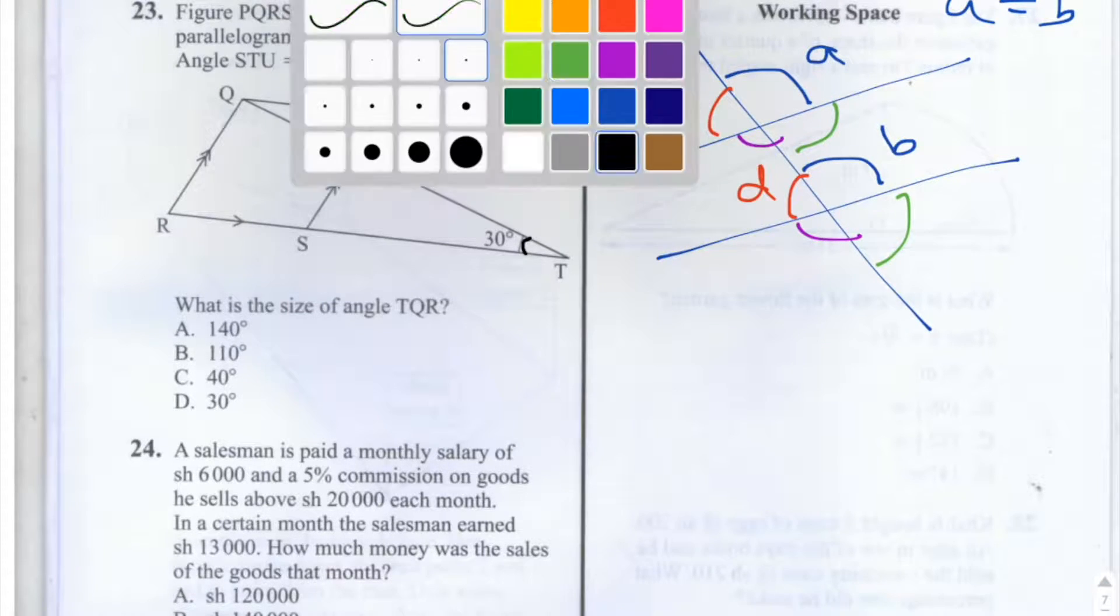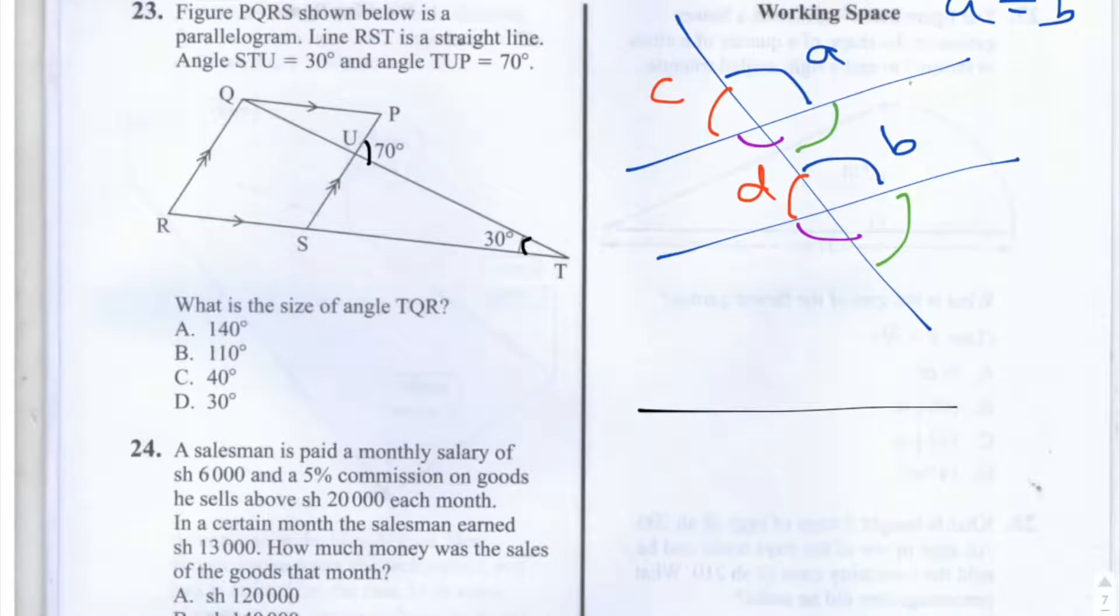We also need to know that if you have angles on a straight line, like so, this angle, this angle, this angle, and this angle, they sum to 180 degrees.